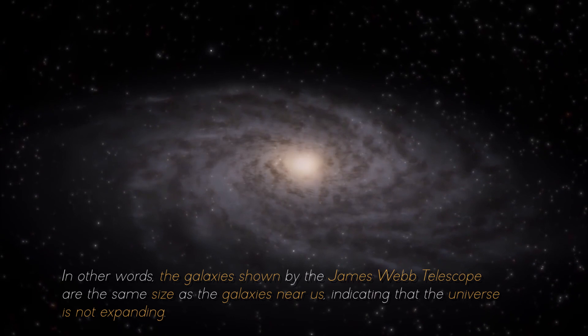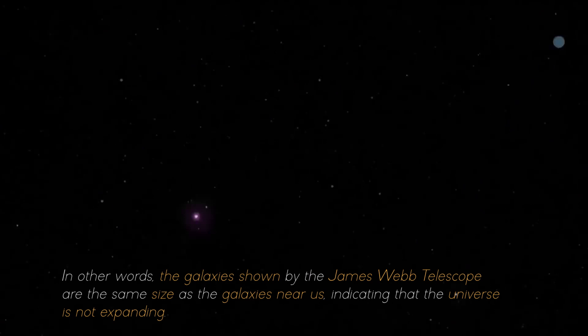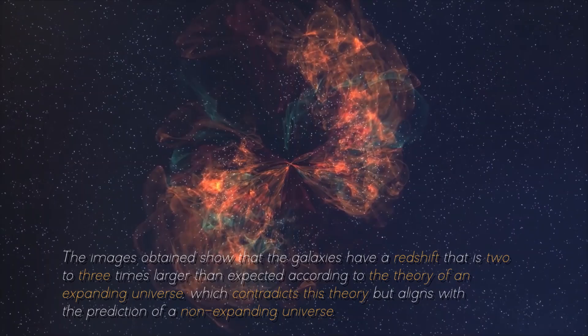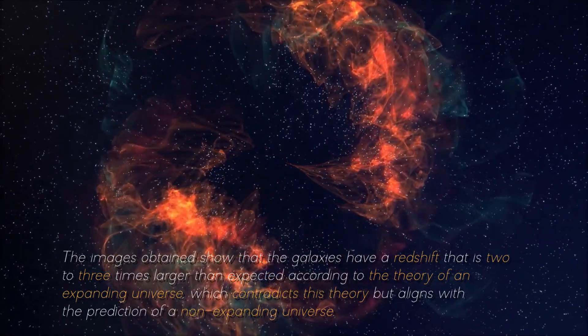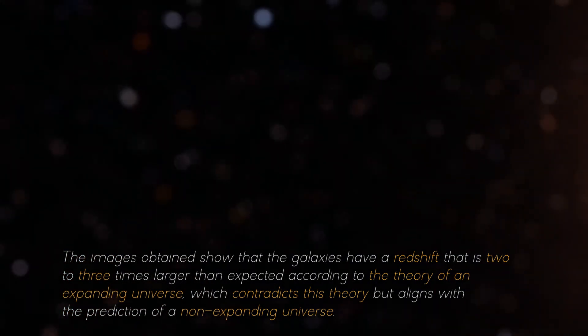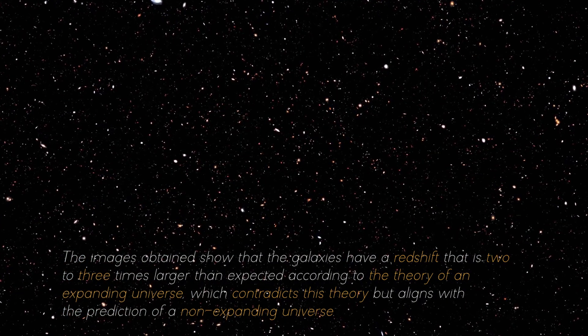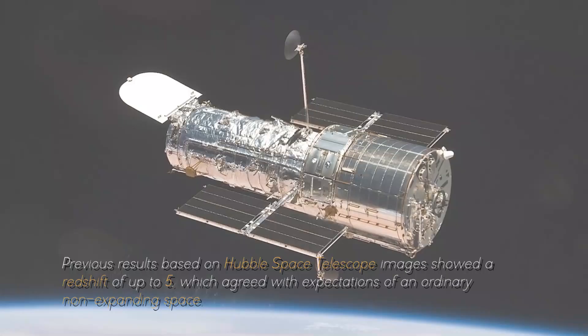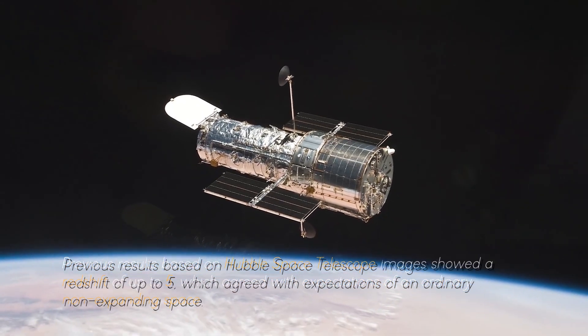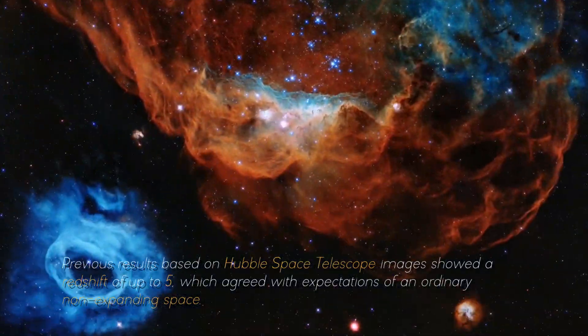In other words, the galaxies shown by the James Webb Telescope are the same size as the galaxies near us, indicating that the universe is not expanding. The images obtained show that the galaxies have a redshift that is two to three times larger than expected according to the theory of an expanding universe, which contradicts this theory but aligns with the prediction of a non-expanding universe. Previous results based on Hubble Space Telescope images showed a redshift of up to five, which agreed with expectations of an ordinary non-expanding space.